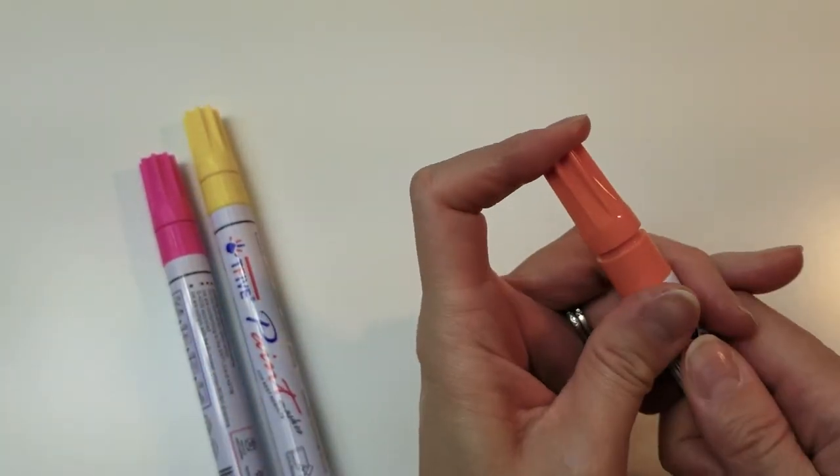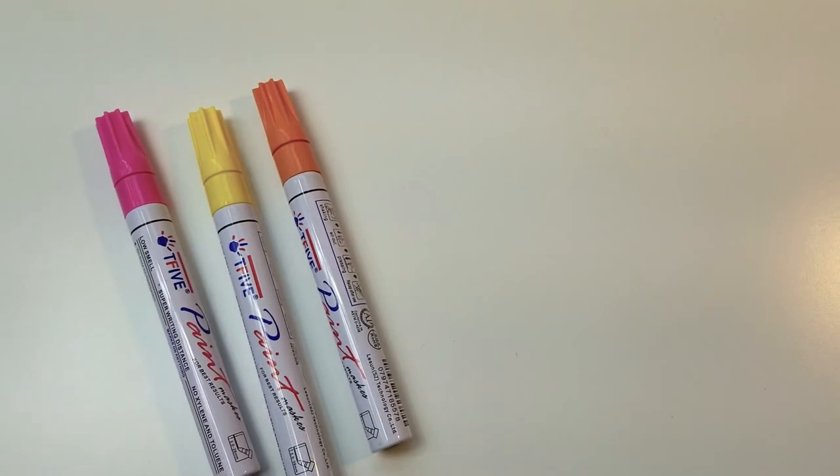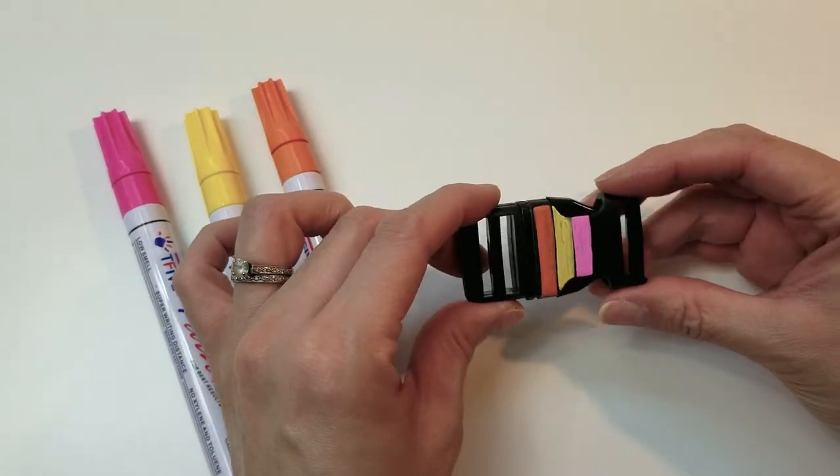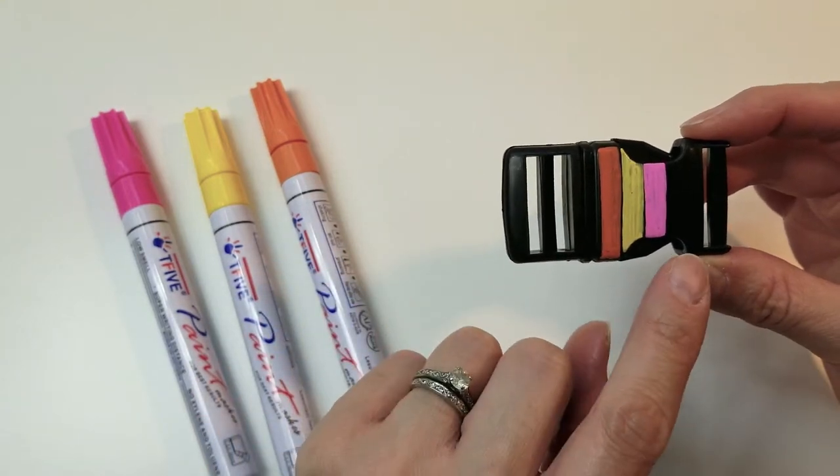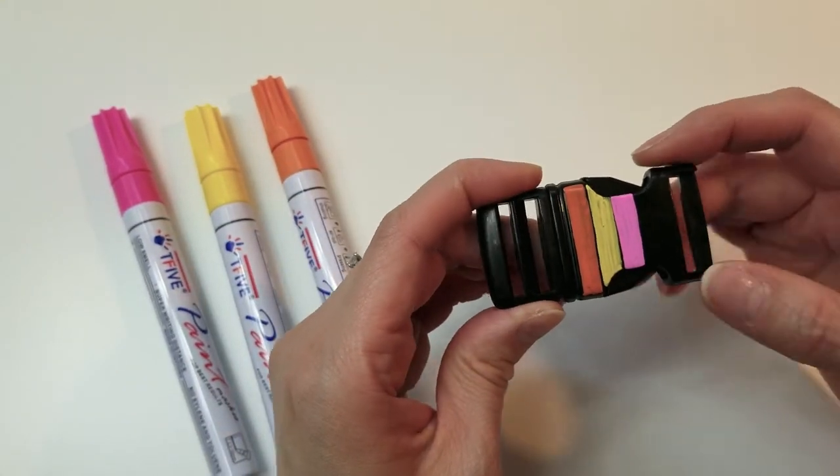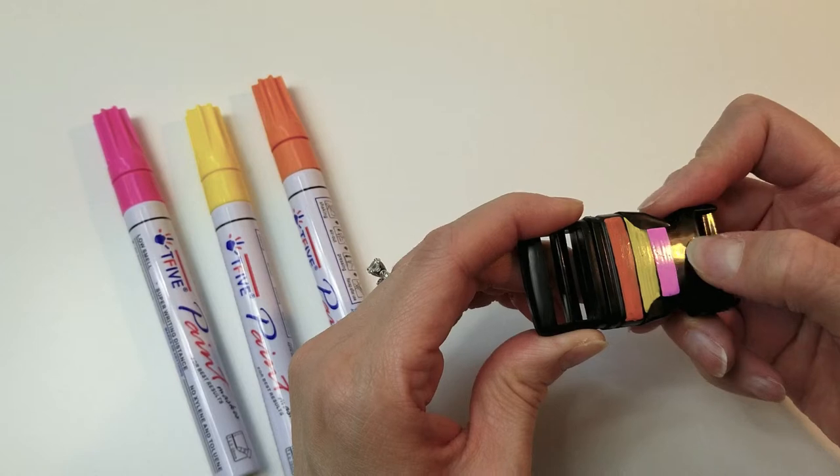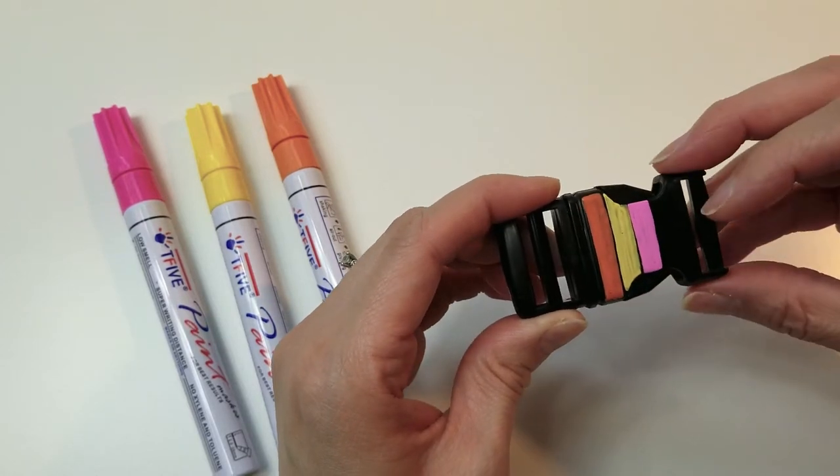I've already pre-marked an object. It's a buckle. I have a spare buckle and I went ahead and put orange, yellow, and pink on it so this is a very shiny buckle.